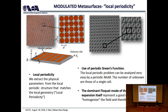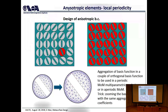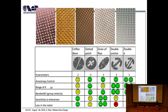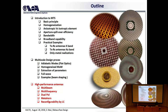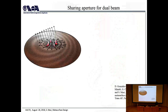The modeling is done using a database constructed with the periodicity approach and periodic expansion in the Method of Moments. There is also a zooming trick to speed up database construction. We have built databases for several elements because the European Space Agency required us to compare the performance of various elements in terms of anisotropic control, range of the average impedance, bandwidth, sensitivity to fabrication tolerances, and material losses.